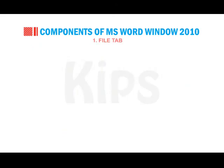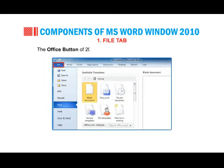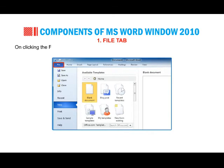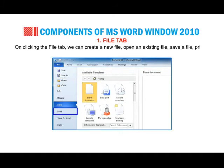File Tab: the Office button of 2007 is replaced by the File Tab in Word 2010. The basic features of Word 2010 are quite similar to those of Word 2007. On clicking the File Tab, we can create a new file, open an existing file, save a file, print a file and perform other tasks.